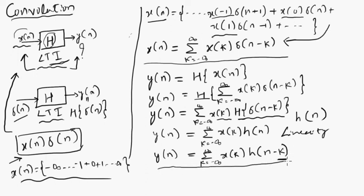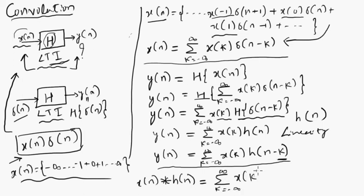This is called convolution, and it can be written as: x[n] * h[n] = Σ (k = -∞ to ∞) x[k]·h(n-k), where * is the convolution symbol. This is called the convolution sum — it's called a sum because we are considering discrete-time signals. When we consider continuous-time signals, this is called the convolution integral, and we will consider that in later videos.